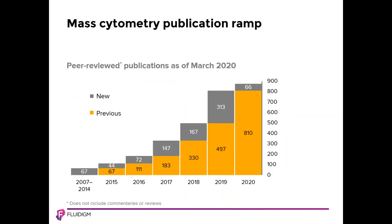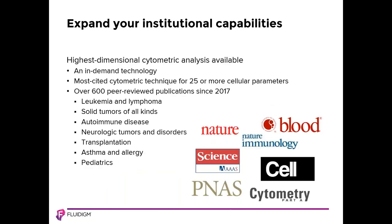Since CyTOF instruments were first sold in 2008, over 800 peer-reviewed papers — not including reviews — have been published featuring significant use of mass cytometry or introducing analysis methods applied to mass cytometry data. Mass cytometry is the way to immediately expand your institutional cytometric capabilities to 40 or more parameters. There are publications and protocols that cover research into all areas of disease, and the technology is applicable to every area of medical research.